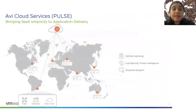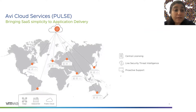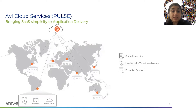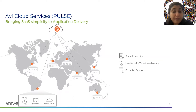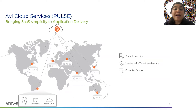As you can see, the cloud services are provided in a SaaS format, so customers do not need to deploy any hardware or other gear to realize the benefits. They are delivered via Pulse, which is globally present. You can have a load balancing environment set up in APJC, North America, or Europe, and get the same set of cloud services seamlessly via the Pulse platform. The services we are initially bringing to market are central license service, live security threat feed, and proactive support. We do plan to keep enhancing and bringing out new operational services delivered as SaaS going forward.